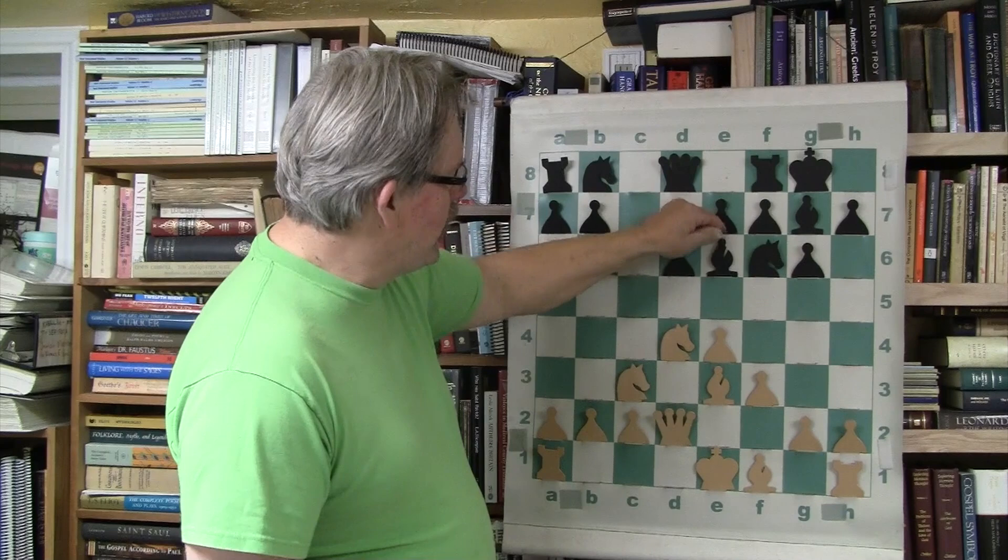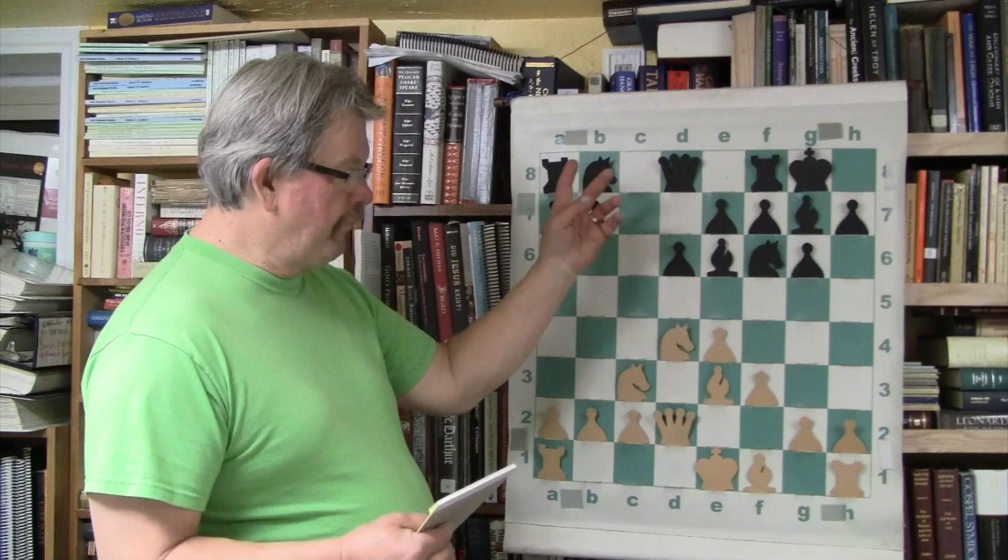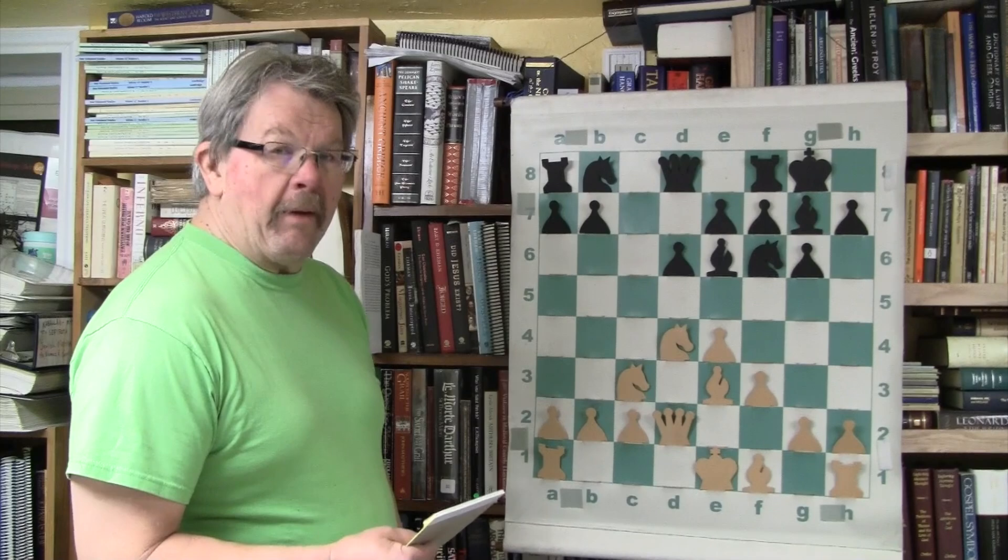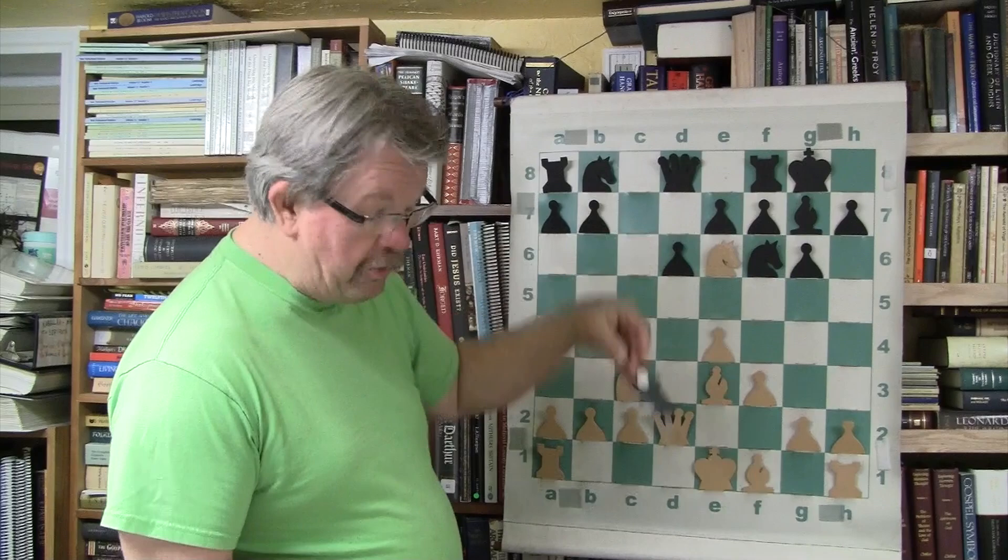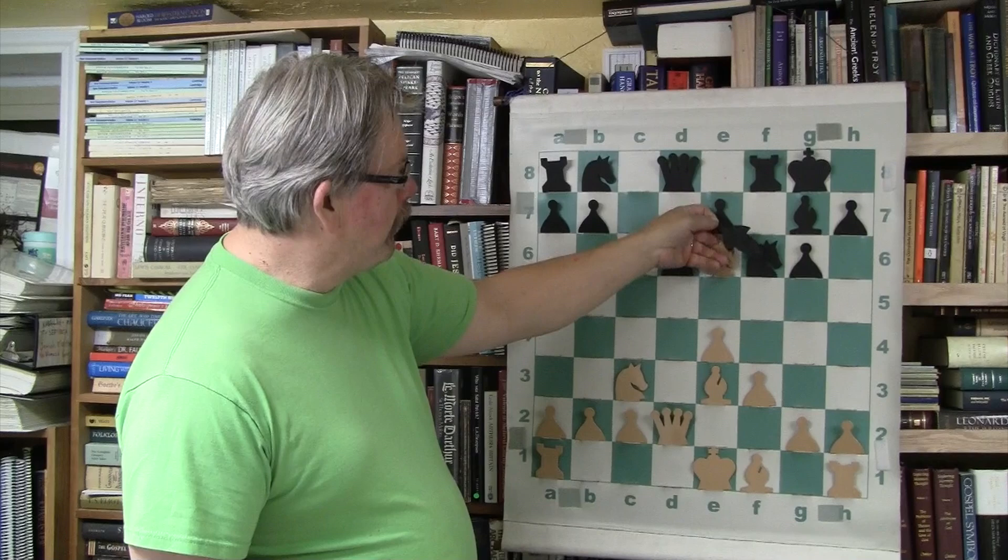And then Bishop E6. Well, how interesting. The typical, the real continuation, I mean if you're gonna do the normal opening, is to bring the knight out, of course, right? With the Sicilian. So maybe he's just trying to change it up so that it'll be a different play. And Bobby says, okay, yeah, let's go ahead and try this.